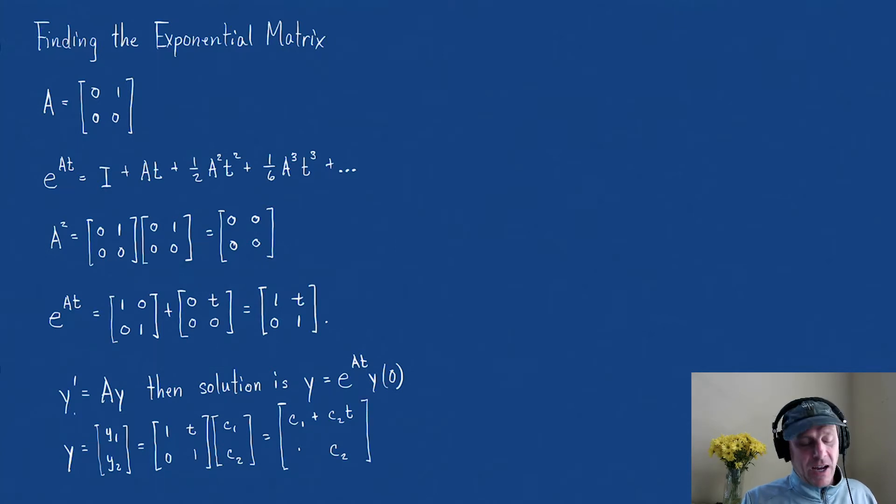Well, remember what we said the eigenvalues were - the eigenvalues were 0. So really, this is c₁e^(0t) plus c₂te^(0t), and our second solution is c₂e^(0t). That is what that's telling us. So it works like we might expect.